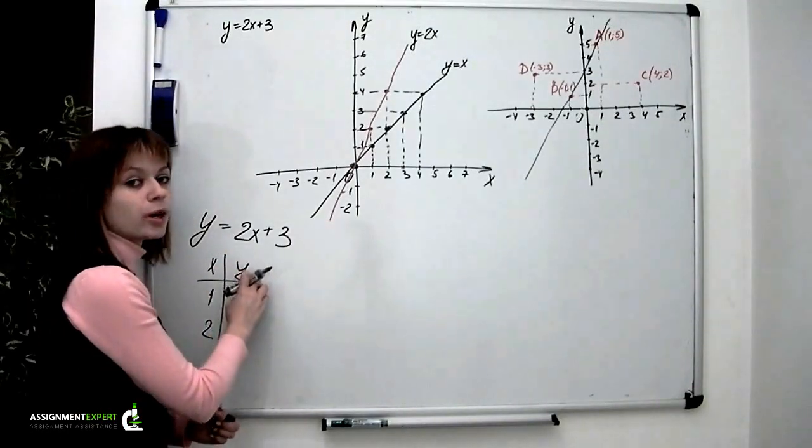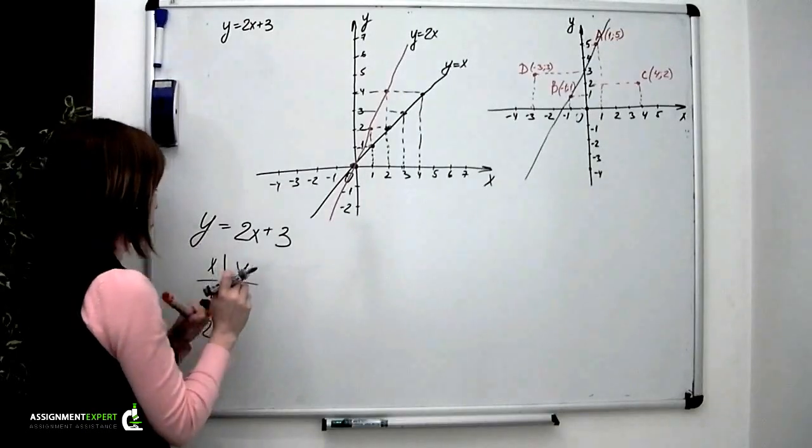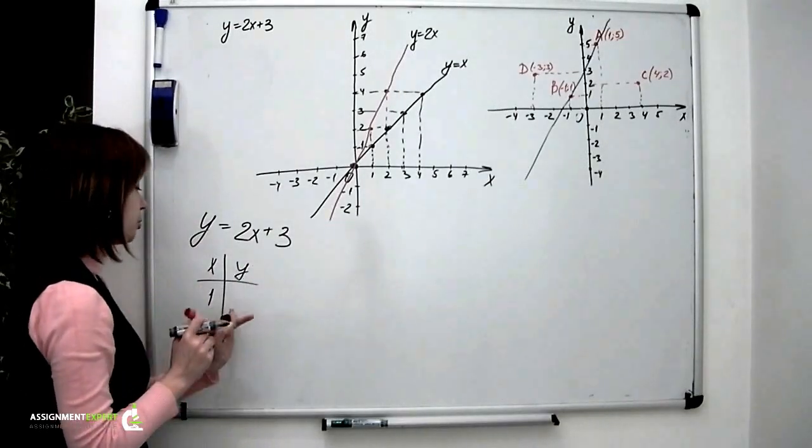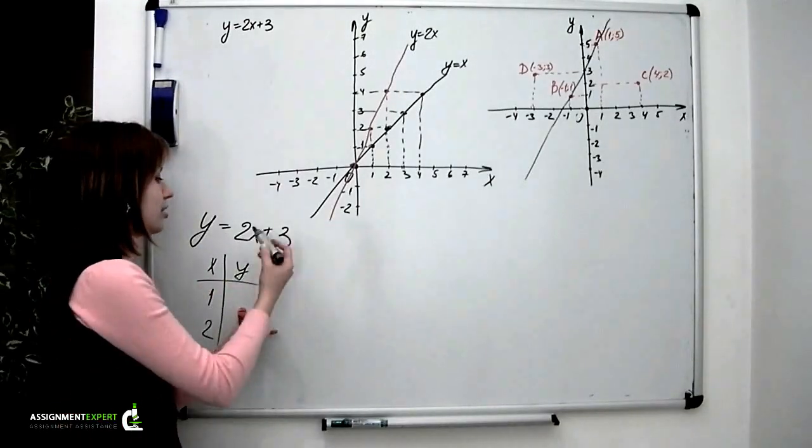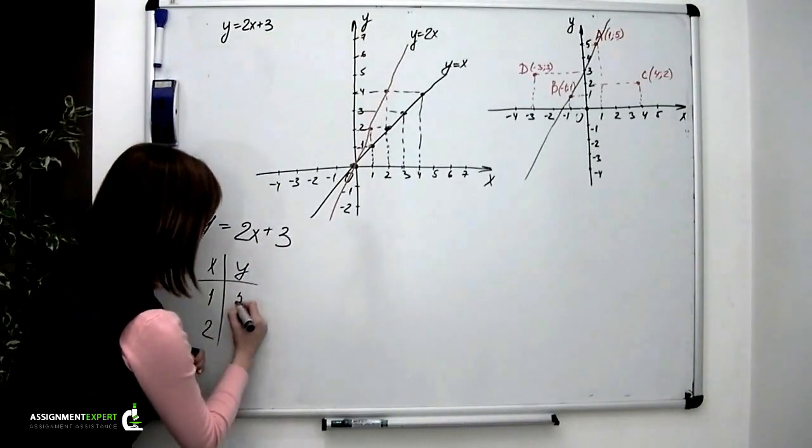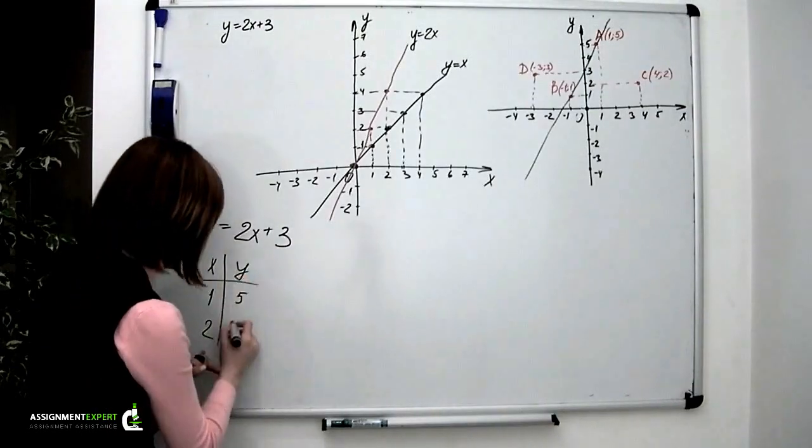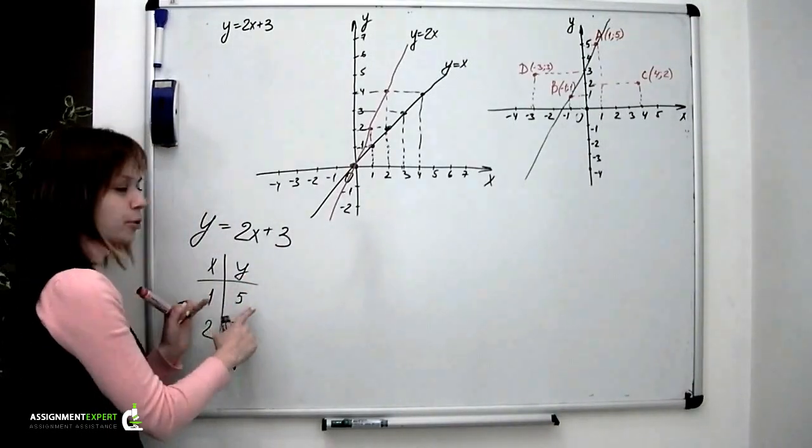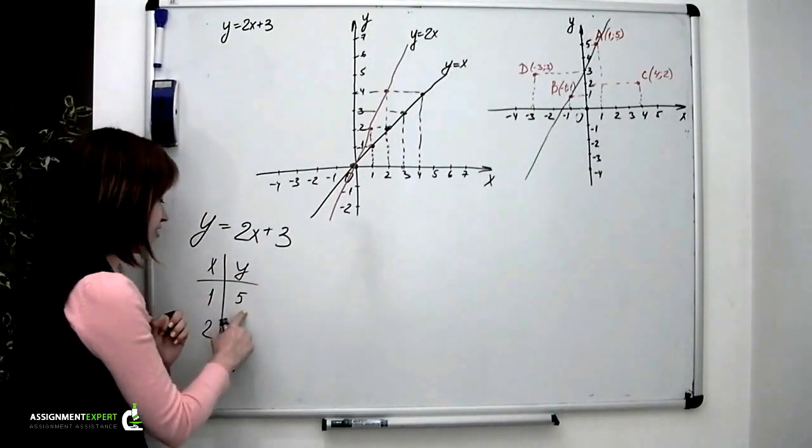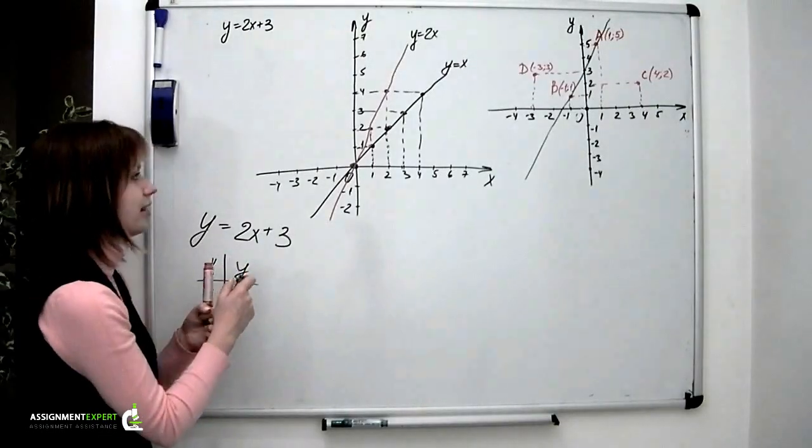We're calculating the y's for these x's. If x equals 1, y equals 2 times 1 plus 3, which is 5. And then 2 times 2 plus 3, which is 7. We now have two points with coordinates 1,5 and 2,7. Let us graph them.